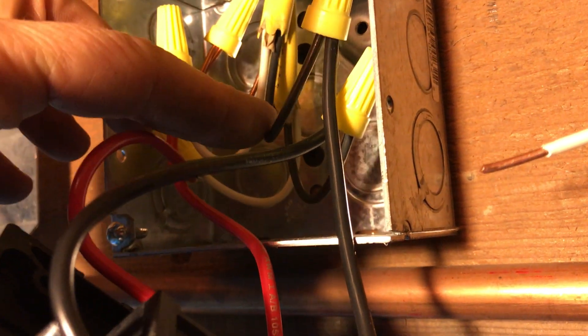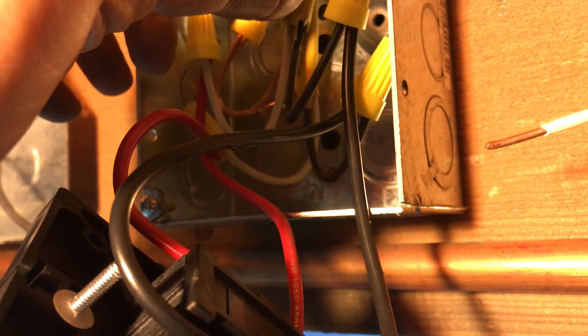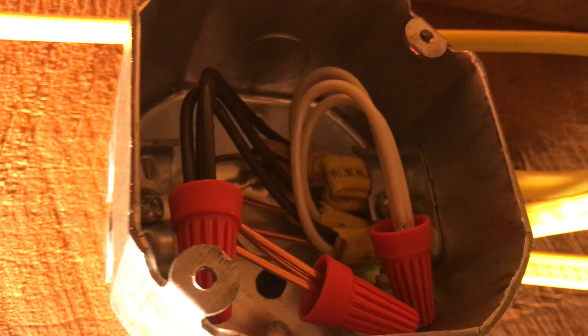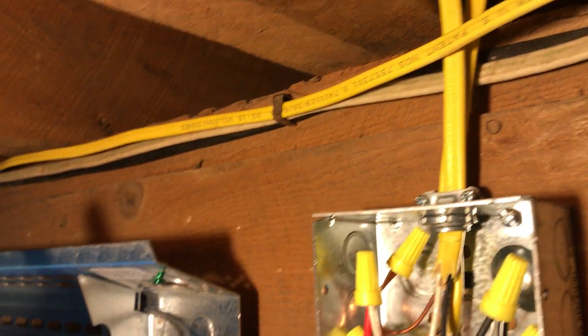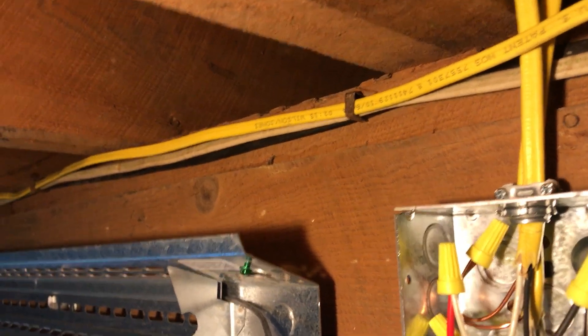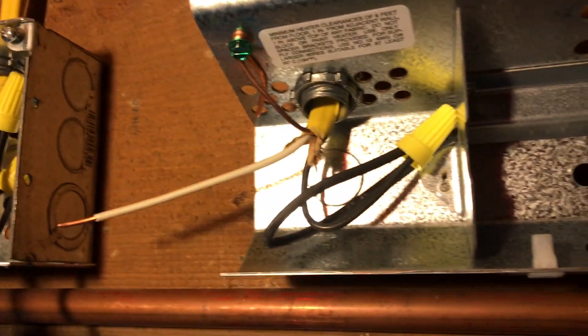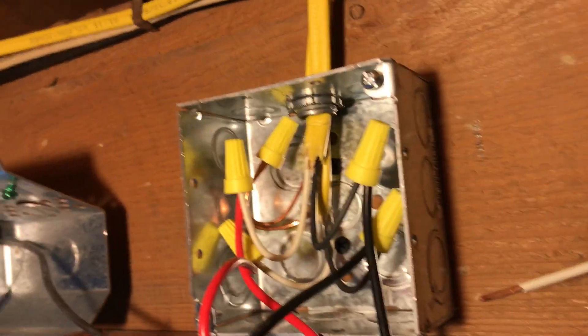Then it's into the top one going through the box towards me, and that goes into the top here where they all get connected. You have to connect all three blacks, all three whites, and all three grounds. That brings it back to the heater over there—it goes to that box and to this heater right here. It feeds both of those heaters.